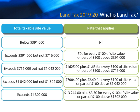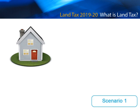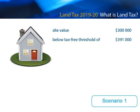So let's now have a look at a few examples. In Scenario 1, only one taxable property is owned, which has a site value of $300,000. As this is below the tax-free threshold, no land tax will be applied.